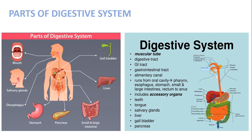Here are the parts of the digestive system: mouth, salivary glands, esophagus, pharynx, small intestine and large intestine, liver and gallbladder. The digestive system completes in five steps: ingestion, digestion, absorption, assimilation, and egestion.